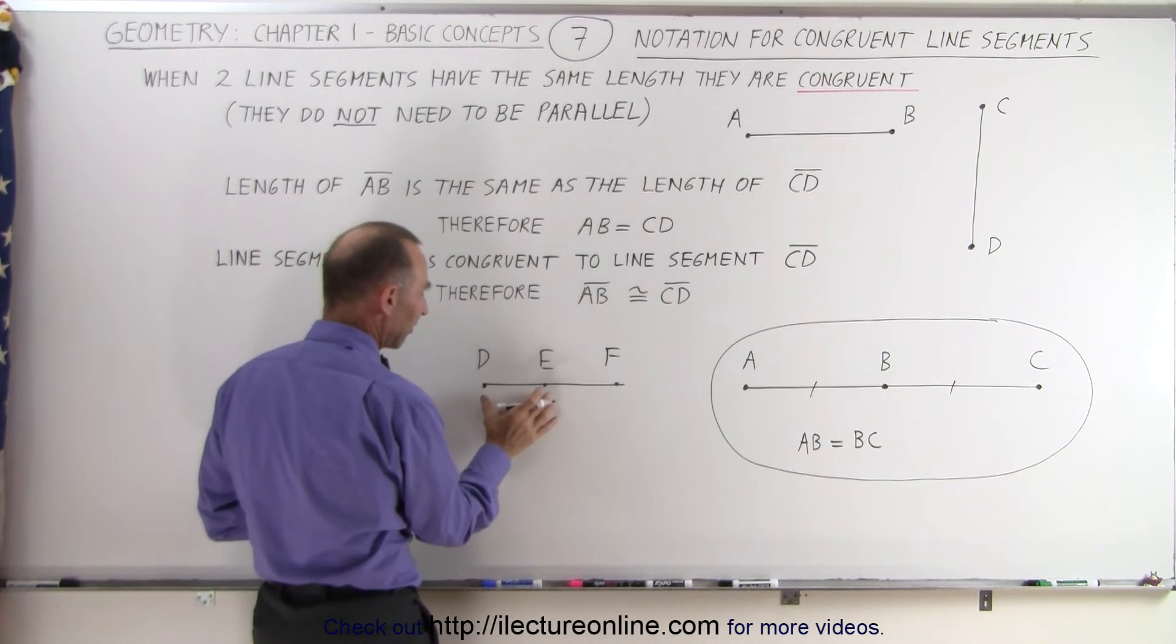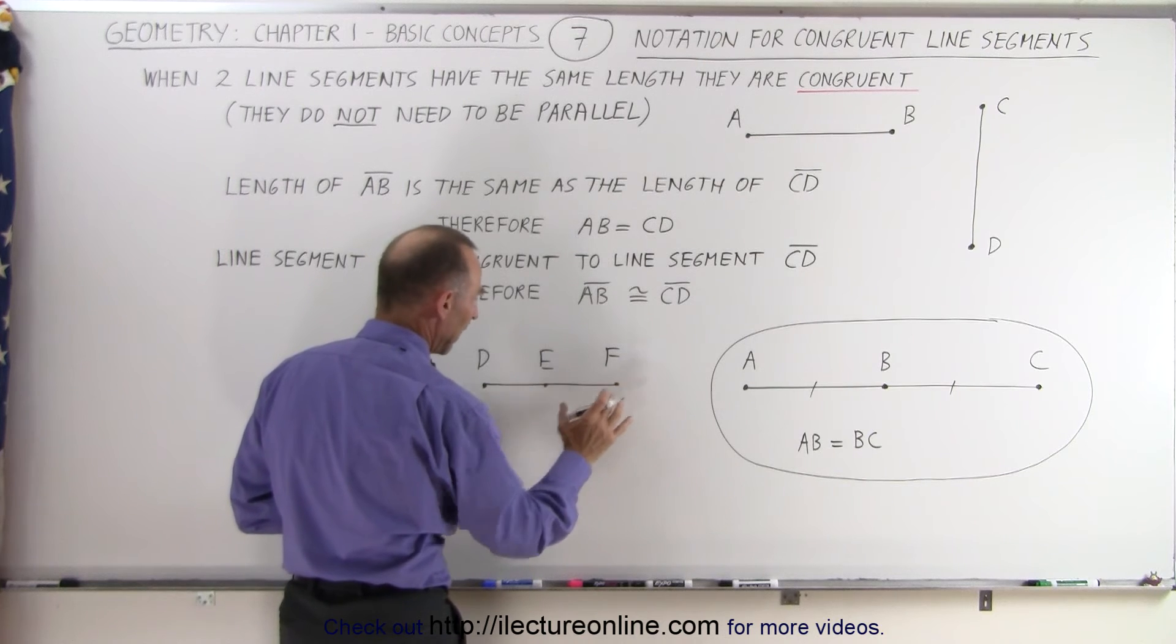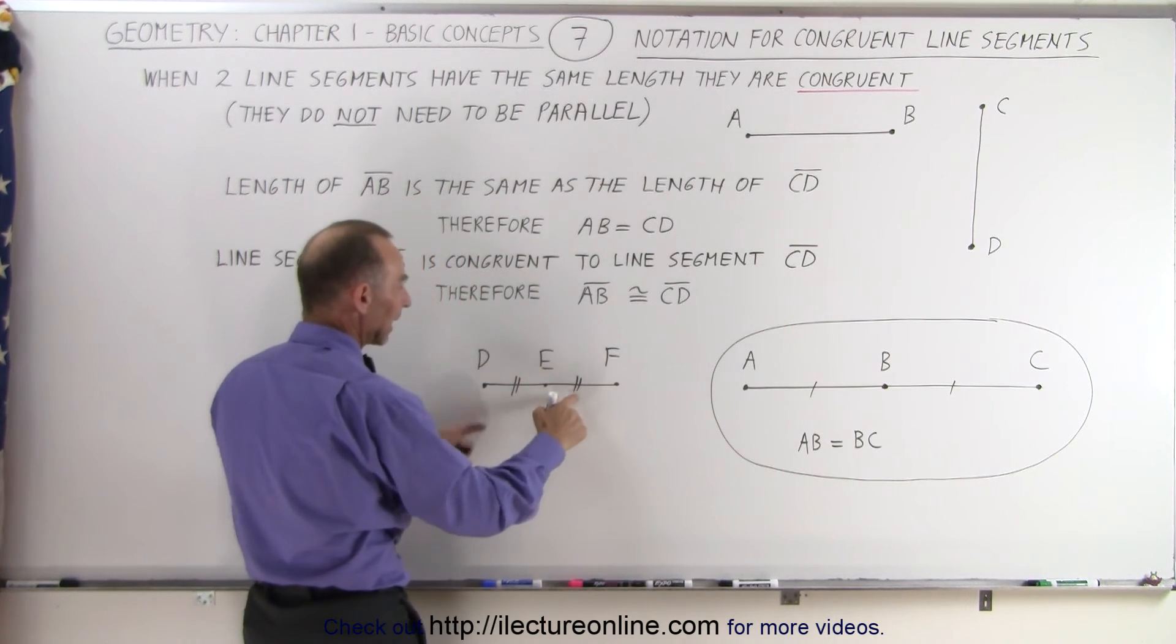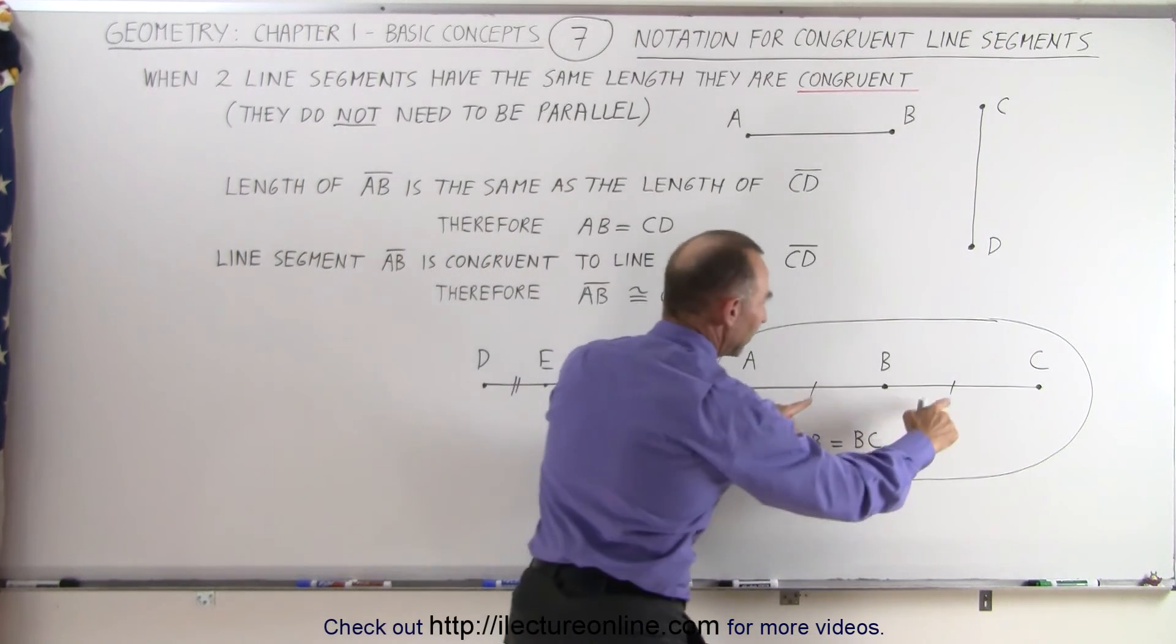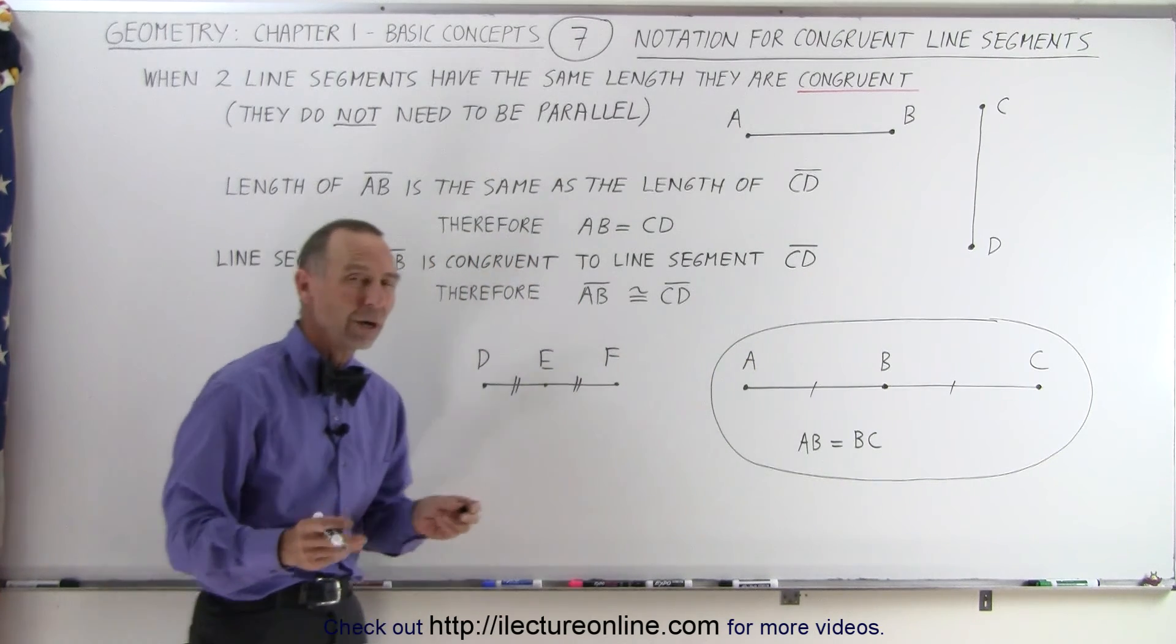And if we want to show that the line segment from D to E is equal to the line segment E to F, then we can put two little tick marks here, indicating that these have the same length, and that these have the same length, and that this length is not the same as here, so we use a different kind of tick mark.